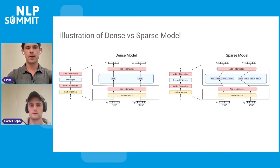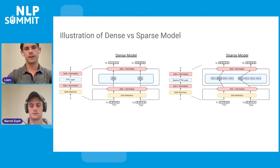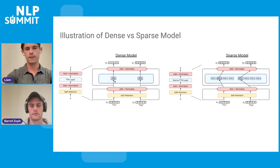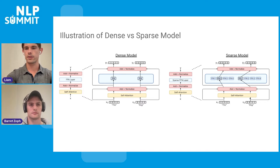In a transformer, which has become the de facto language modeling approach, we have self-attention, add-normalize, and feed-forward blocks interspersed. These feed-forward blocks are what is often turned into a sparse layer for modern models. To visualize this, consider two tokens — 'the' and 'dog' — flowing through a transformer. On the left, the dense model uses the same feed-forward network for each token. For a sparse model, a selection is made: the token 'the' is sent to feed-forward network 2, and the token 'dog' is sent to feed-forward network 1. These are very large models, but they have the same computational cost as the dense model.